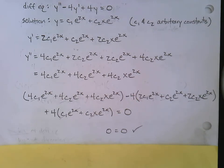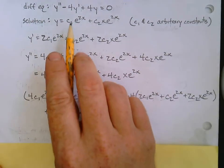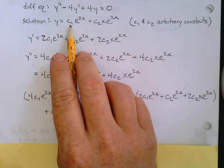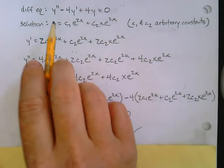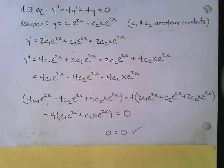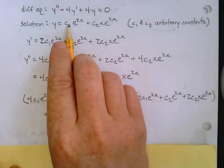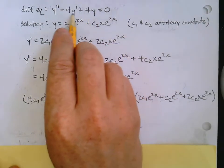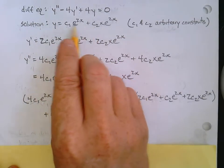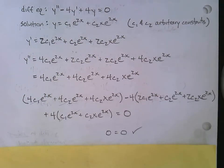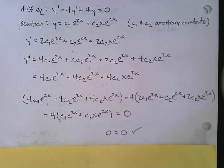This family of solutions happened to have two arbitrary constants, but families don't have to. Notice there were two arbitrary constants and the highest derivative was a second derivative. There is a connection there — second derivative goes with two arbitrary constants. That goes beyond this course, but if you study differential equations you'll pick up on that pretty quickly.